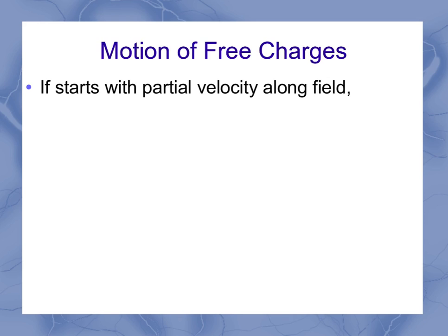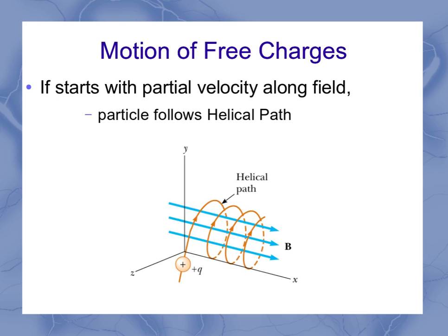If I start off with a velocity which is partially along the field and partially perpendicular, I end up getting a helical path. In other words, it's going to spiral along the magnetic fields and around the magnetic fields at the same time. So it looks something like this.